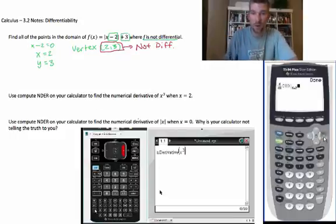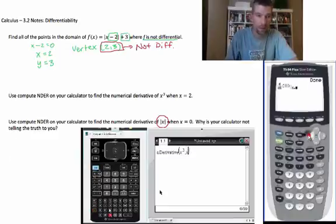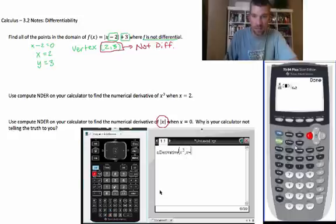But you have to be smart enough to know that when you are working with absolute value of x at 0, that's where we're going to get our vertex. And wherever that vertex happens, no derivative can occur there.